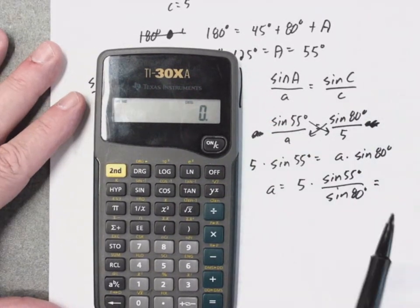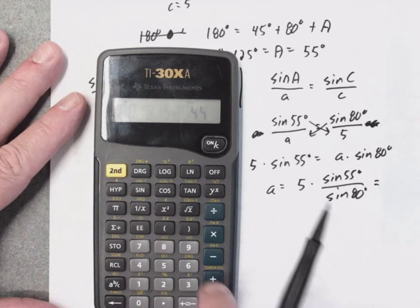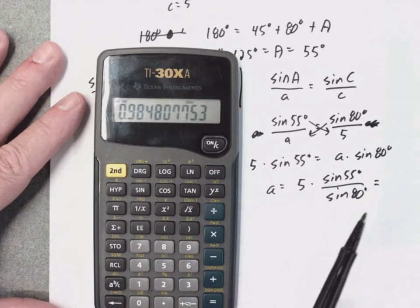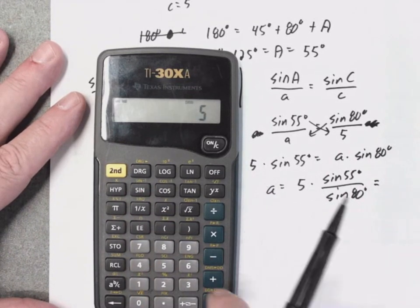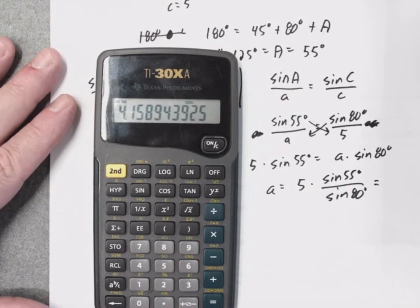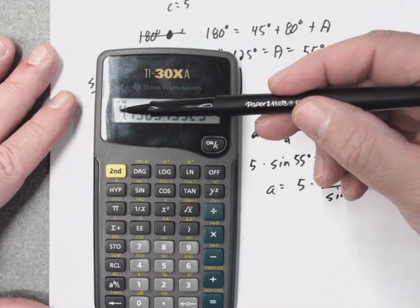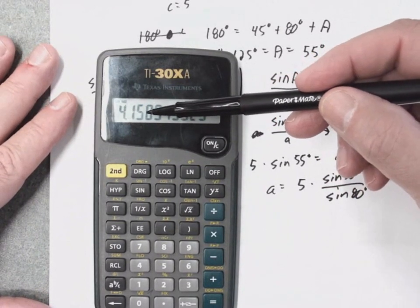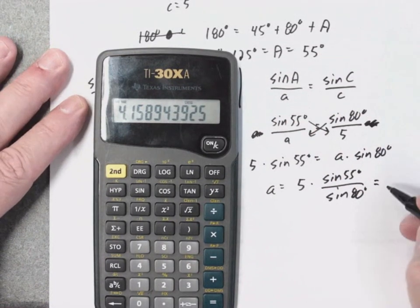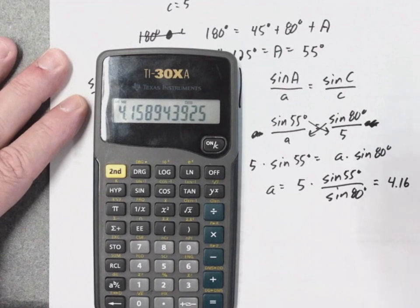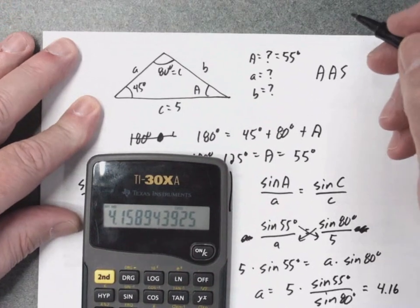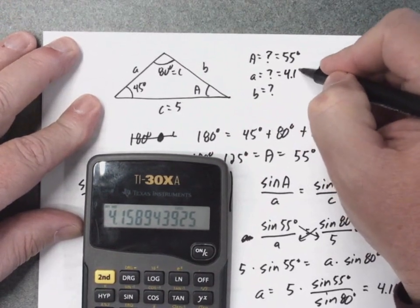So, I'll put in 55 and I'll hit the sine and I'll divide it by 80, hit the sine and I'll take that times five. Now, they want us to round to two decimal places. So, I've got 4.158. The third digit is an 8, so that's going to cause my second digit to bump up. It looks like it should be 4.16. So, I go back up here. I've now determined A is 4.16.